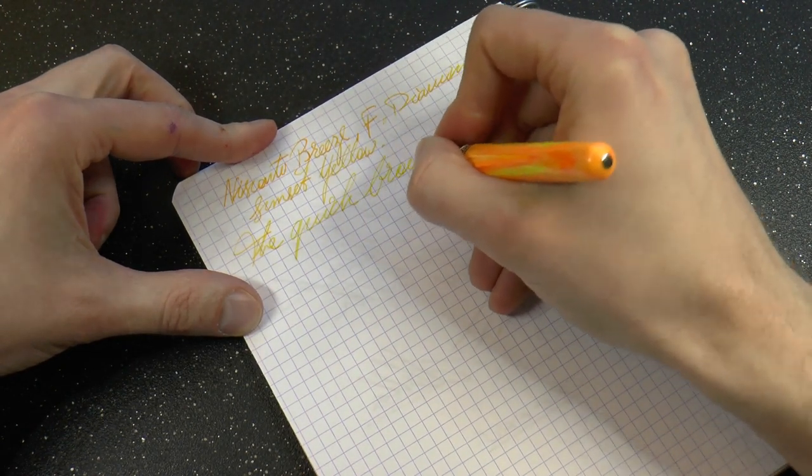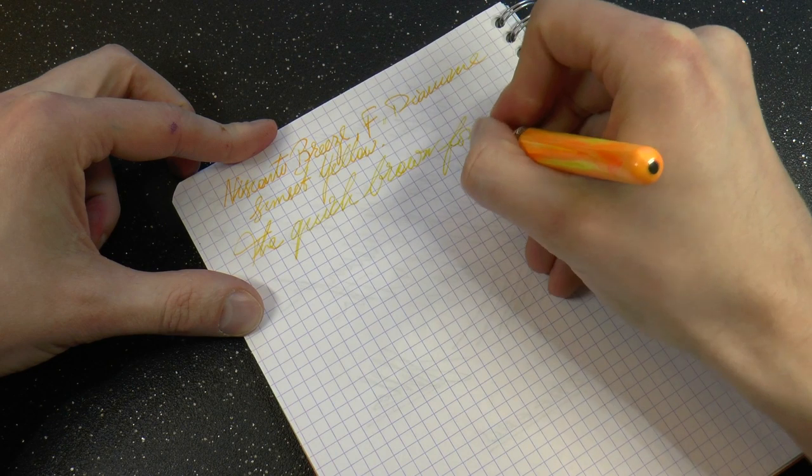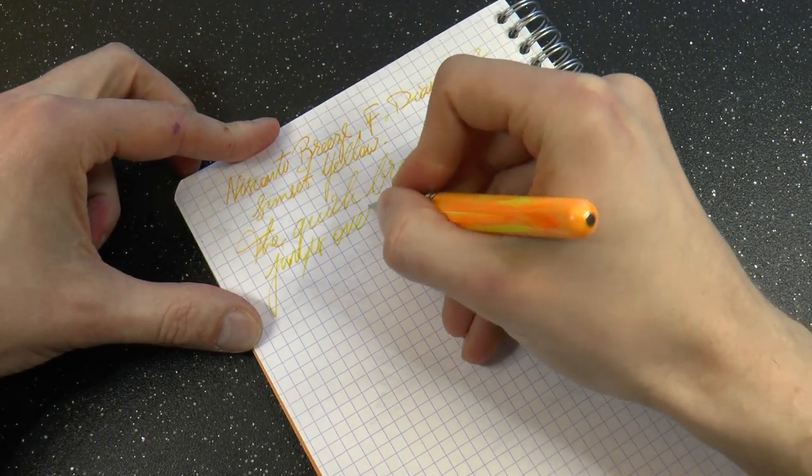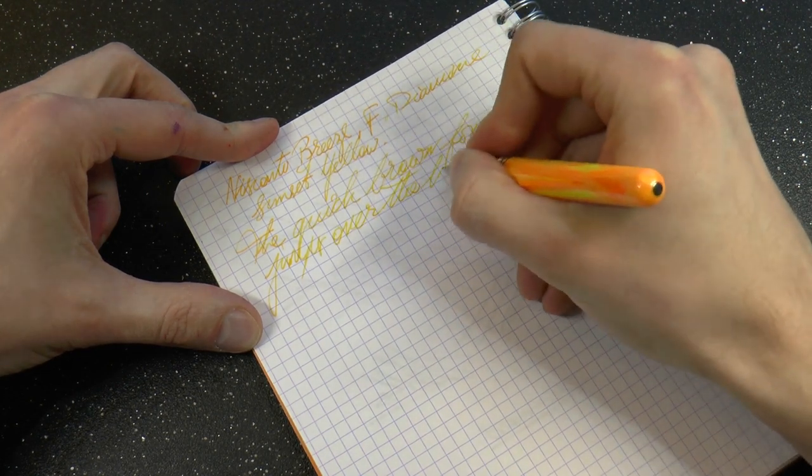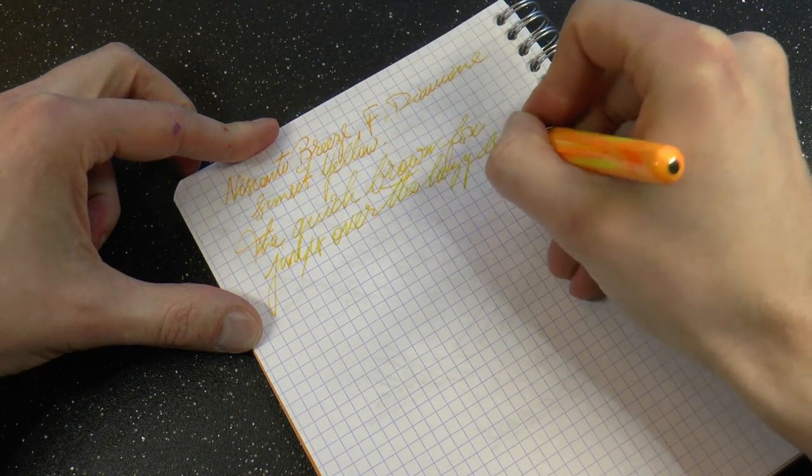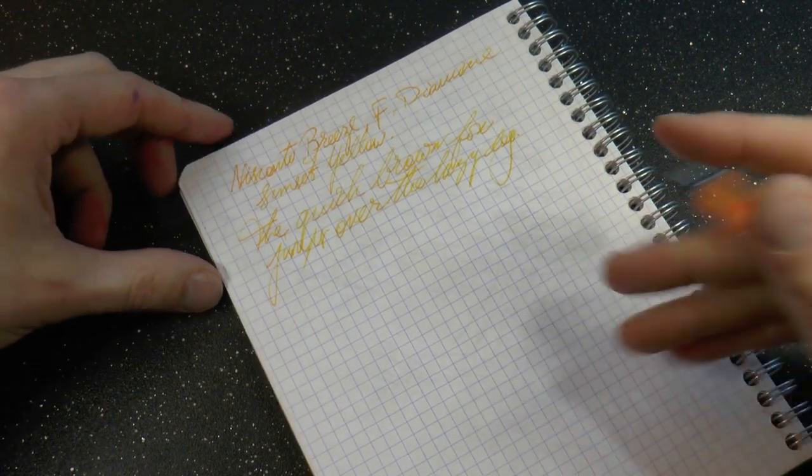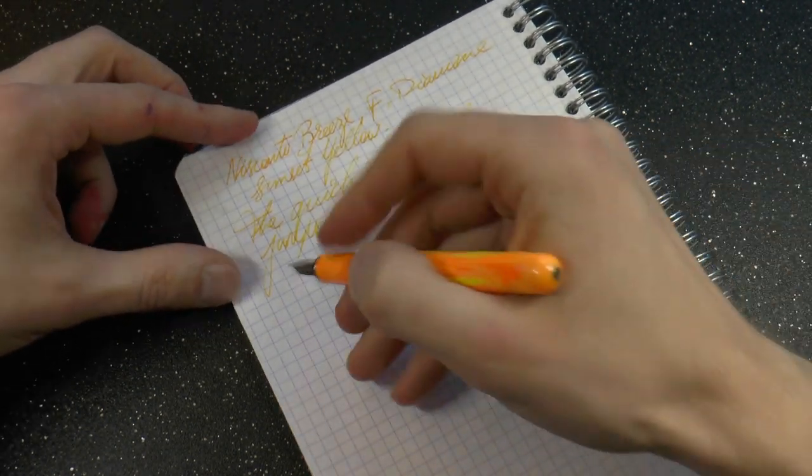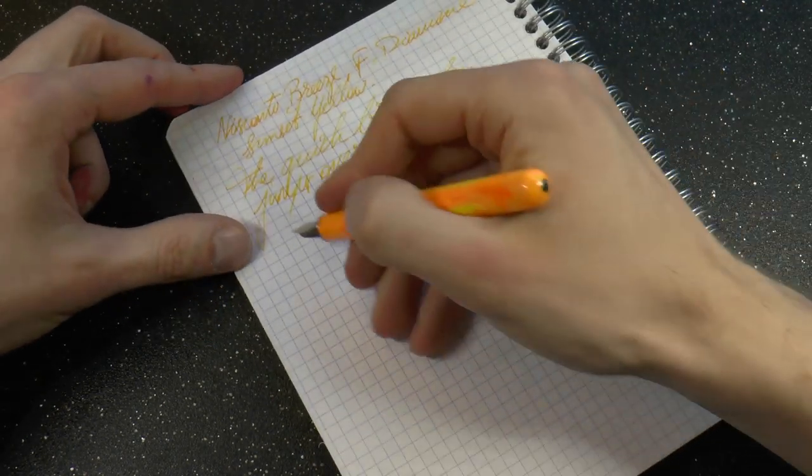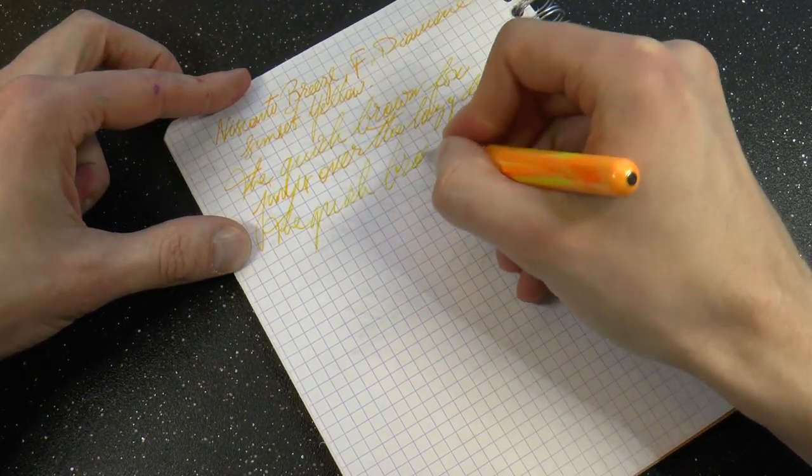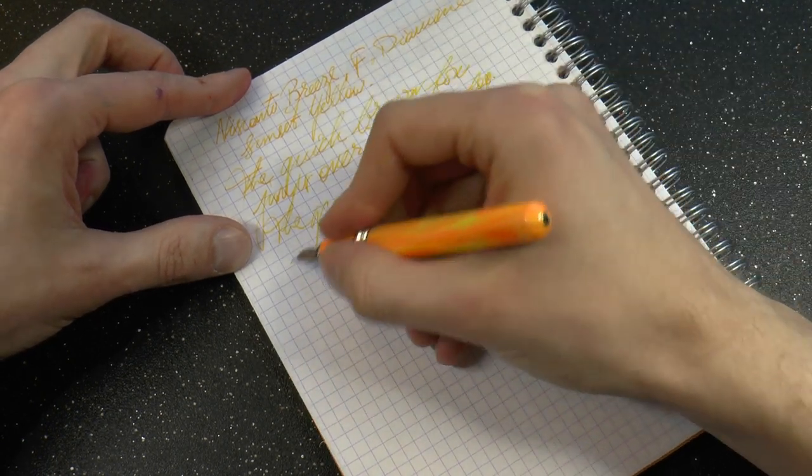So the first thing you may notice, and I'll shut up for a second, is that this is a noisy nib. It is a nib with a large amount of feedback. This is not a smooth nib. And I also will say I'm not sure how much of a medium nib this really is, because it kind of strikes me as a fine nib, even though it is marked medium.